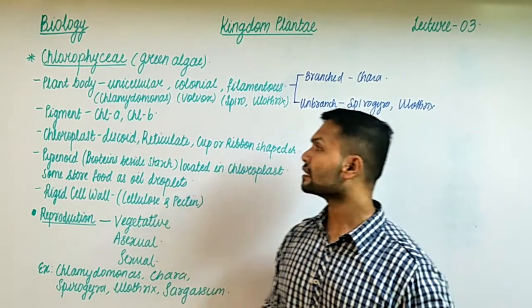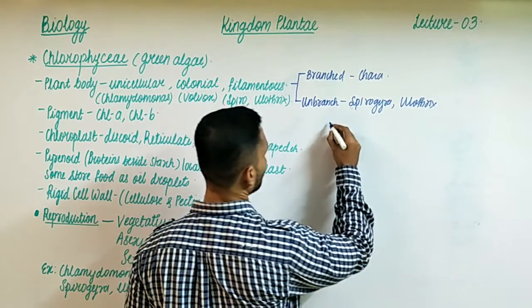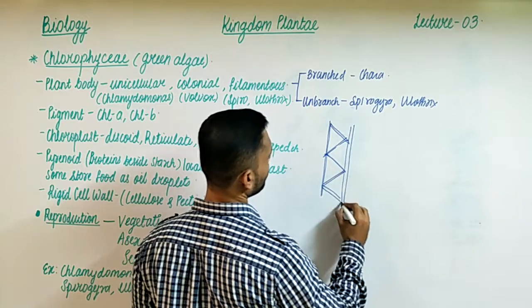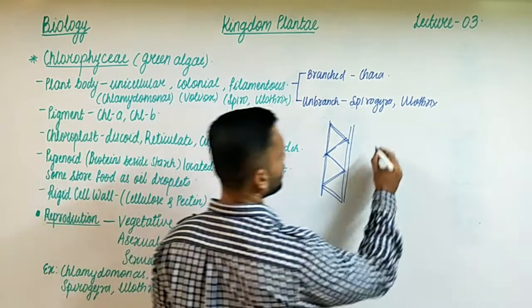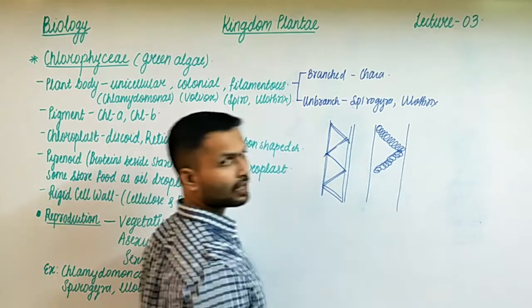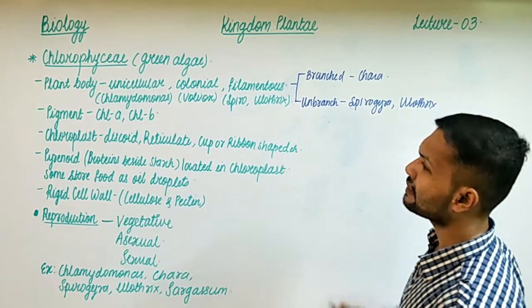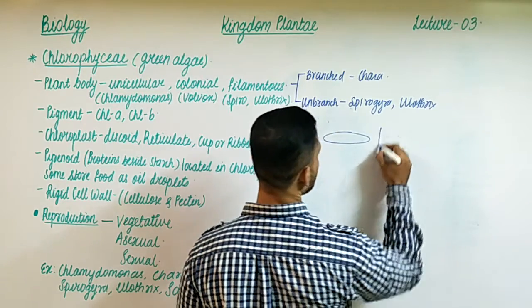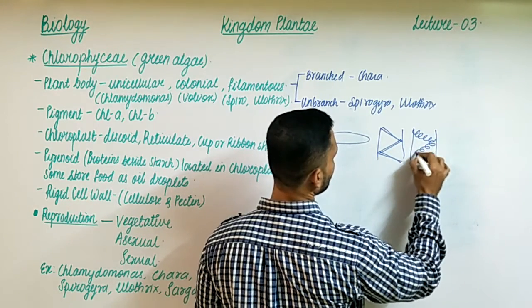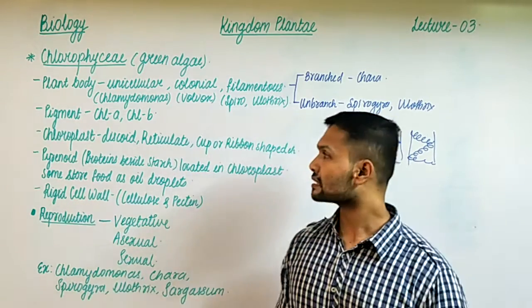Now, the chloroplasts in Chlorophyceae are of different shapes - discoid (disc shape), reticulate as in Spirogyra where chloroplasts are in a reticulate pattern, cup shape, or ribbon shape. In some filamentous algae the chloroplast can be found in ribbon-like, spiral, or other varied forms.